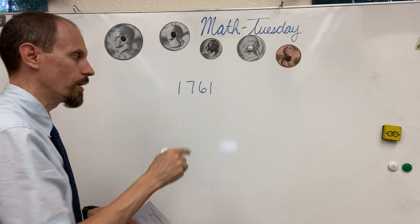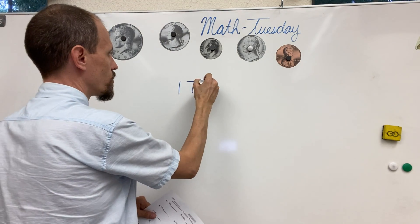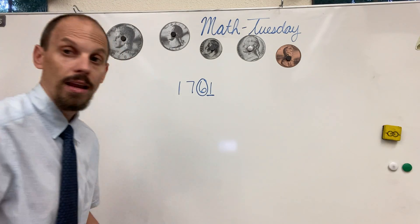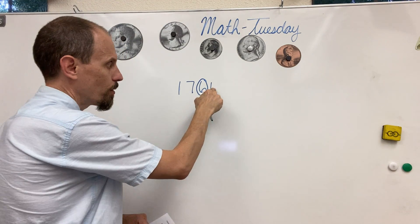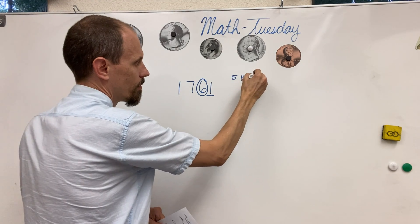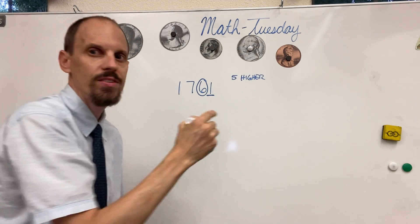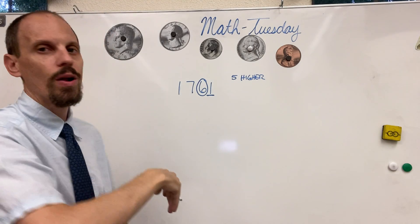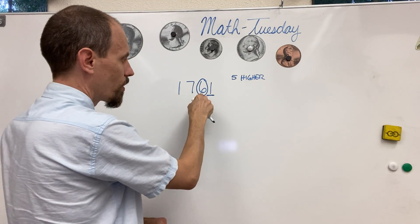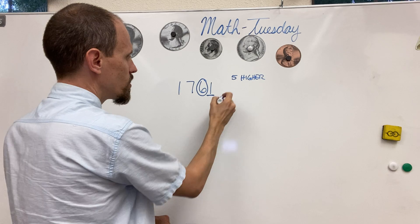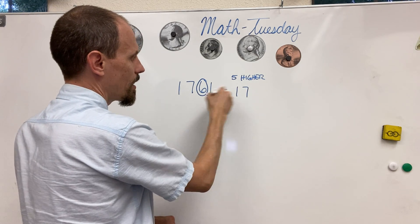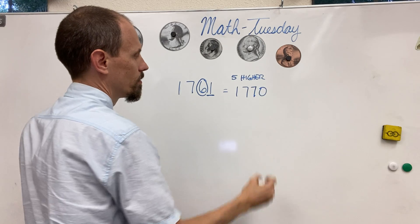So where's our tens place? Ones, tens. Let's circle our tens place and look at the number right beside it. Now remember what we said: if this number is five or higher — if it's five, six, seven, eight, or nine — it's going to round up to the nearest 10, which means it's going to change. So this is going to equal 1,700 and what? What's the nearest 10? 70.